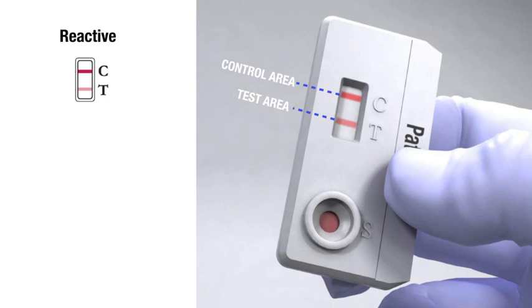Test results with visible lines in both test and control areas, regardless of intensity, are considered reactive. A reactive test result means that HIV-1 and or HIV-2 antibodies have been detected in the specimen. The test result is interpreted as preliminarily positive for HIV-1 and or HIV-2 antibodies. Follow CDC or your individual country's guidelines to inform the test subject of the test results.